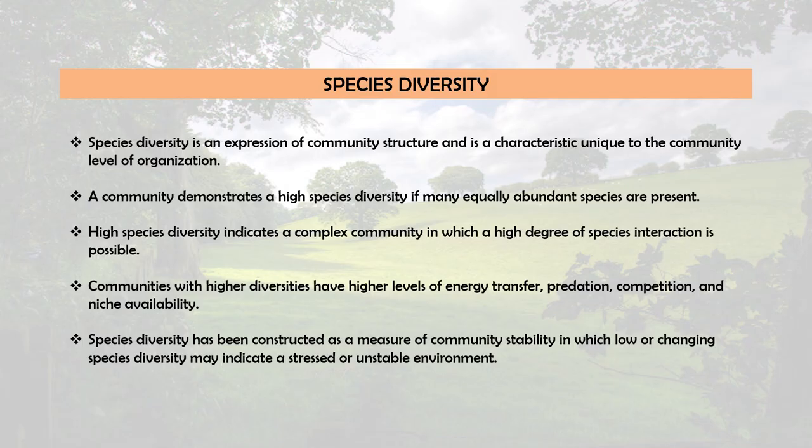Today we are going to study about species diversity. Ecological communities do not all contain the same number of species, and one of the active areas of research in community ecology is the study of species richness or diversity. A community shows high species diversity if many equally abundant species are present, and if only a few species are abundant, then species diversity is low.